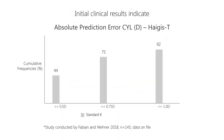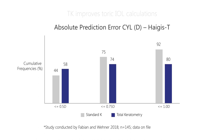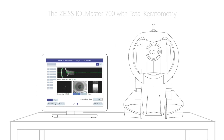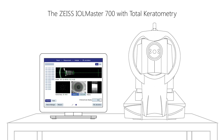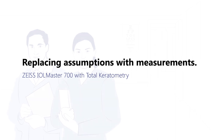Initial clinical results indicate that total keratometry improves Toric IOL calculations. The IOL Master 700 with total keratometry: replacing assumptions with measurements.